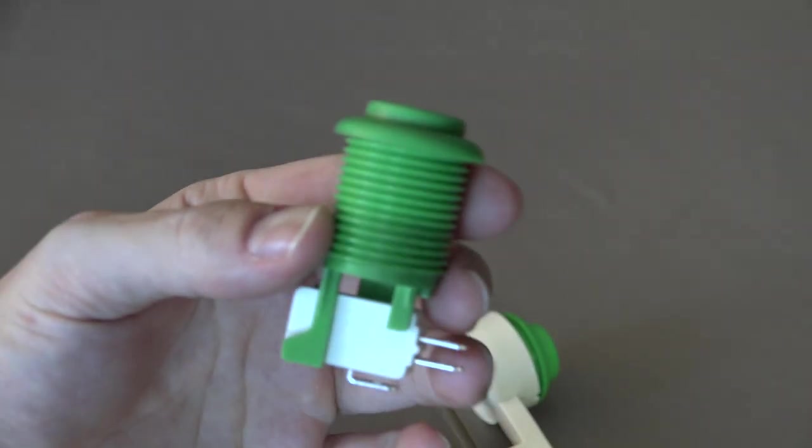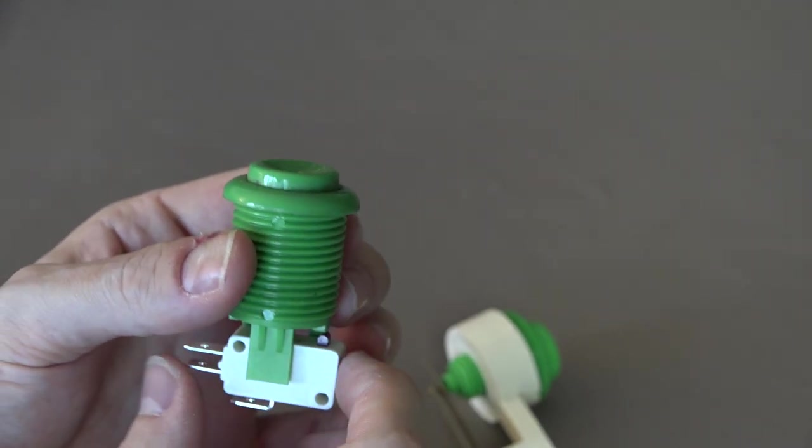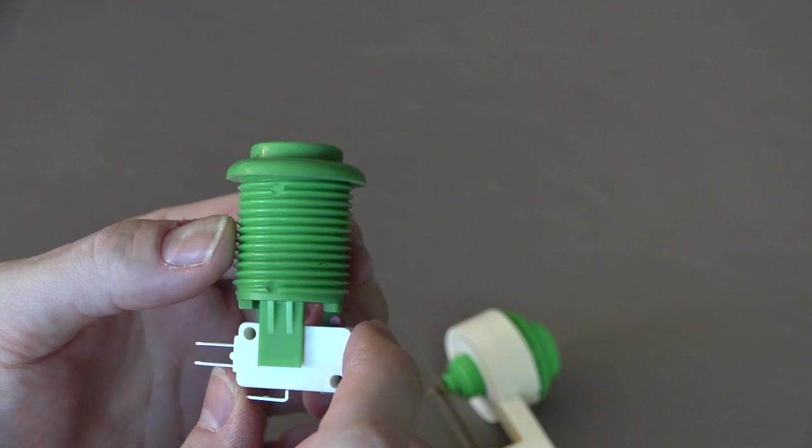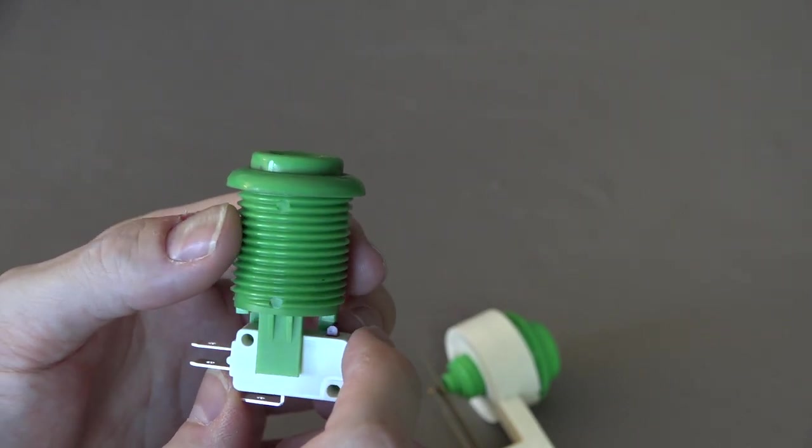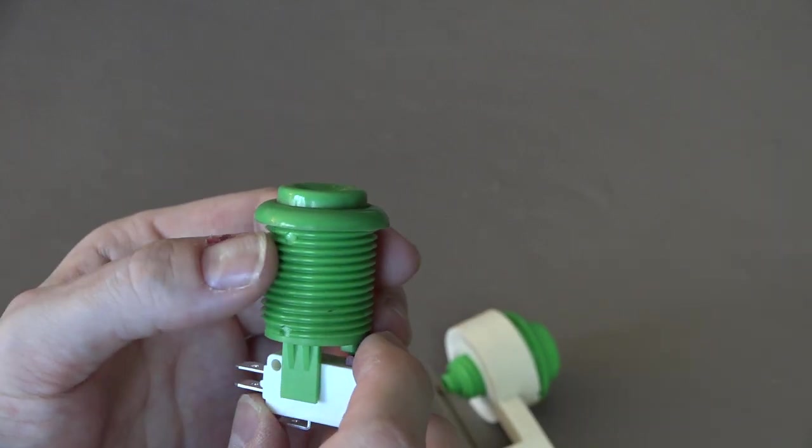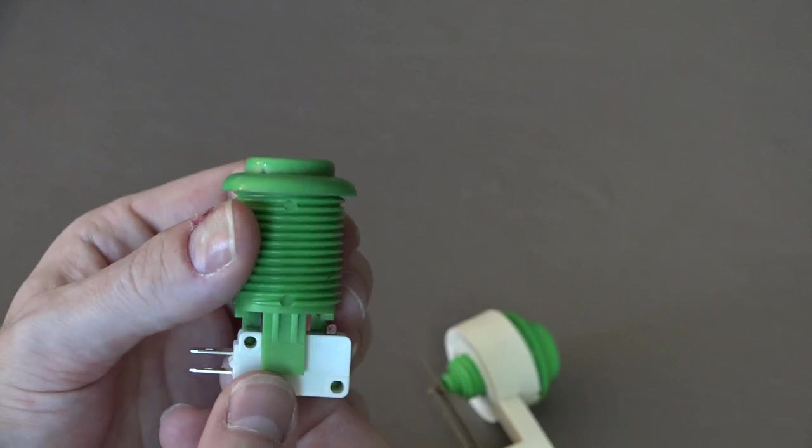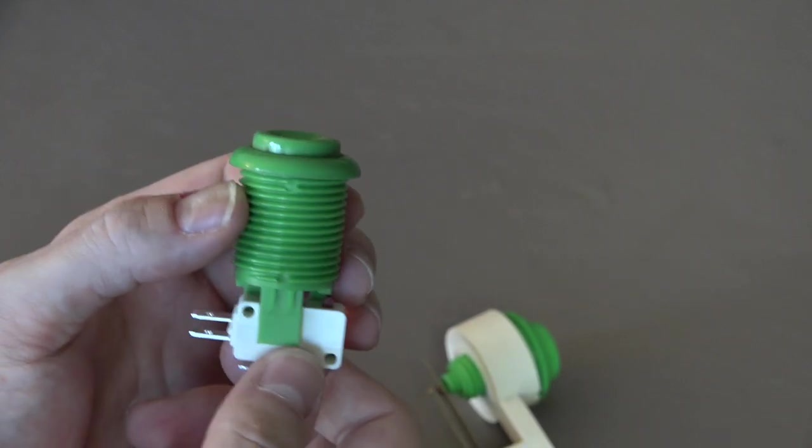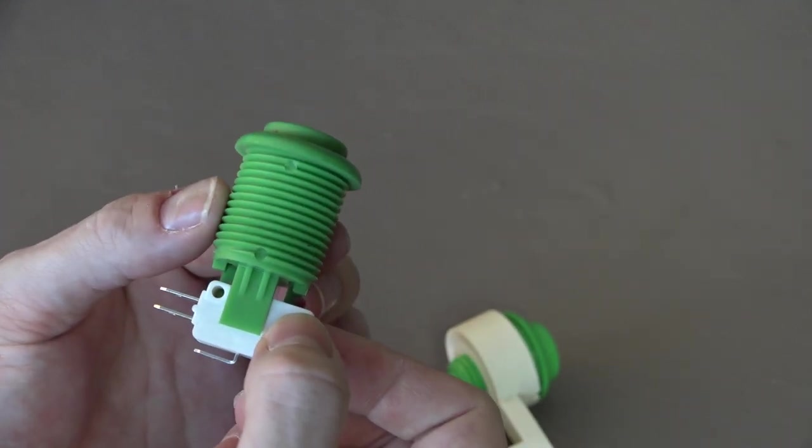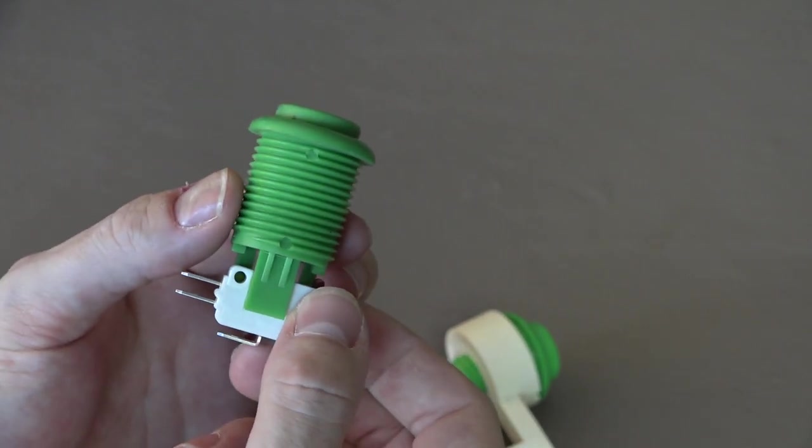So let's talk microswitch buttons and their advantages. Well first and foremost, you can find these brand new. Since these were made in the mid to late 80s and onward, microswitch buttons are a dime a dozen. They're easy to find. I mean they're not precisely a dime a dozen, they are a couple bucks, but they're very very easy to find and readily available. Almost every parts store will have microswitch buttons.